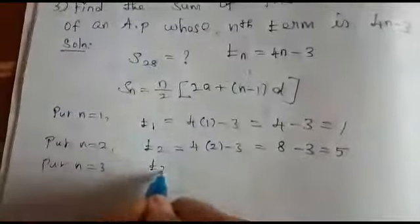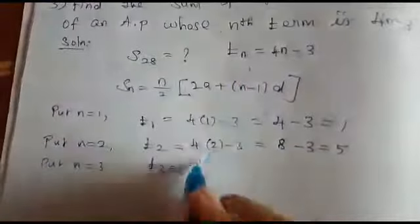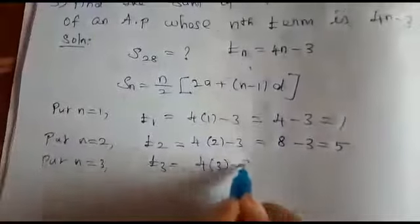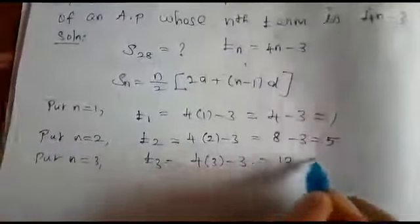T3 equals 4 into 3 minus 3. 4 threes are 12. 12 minus 3 is 9.